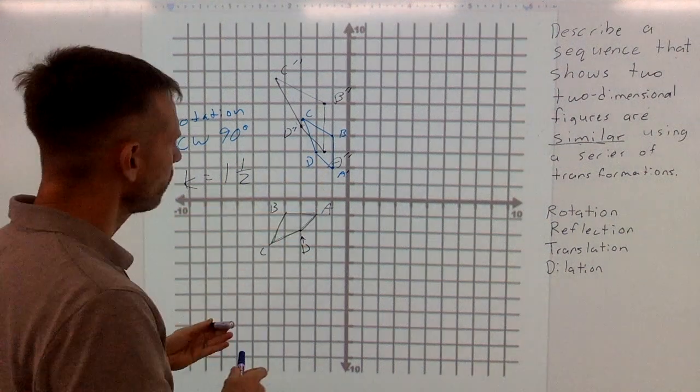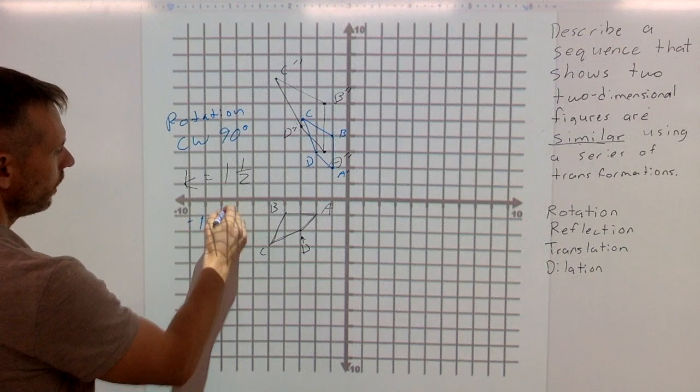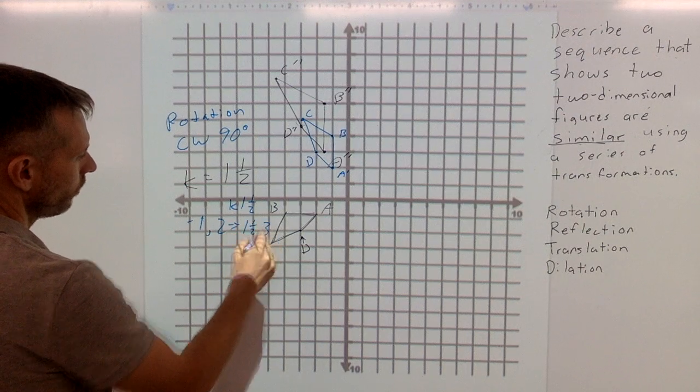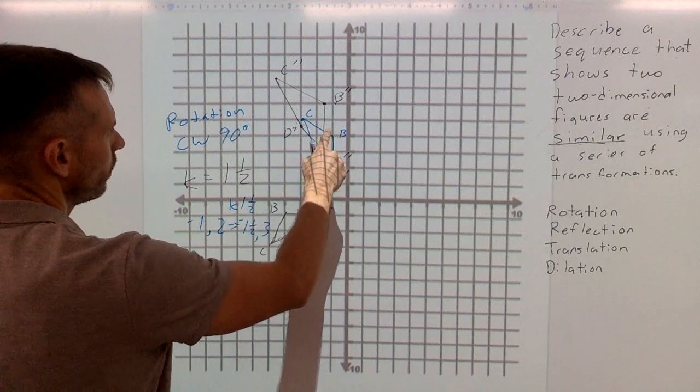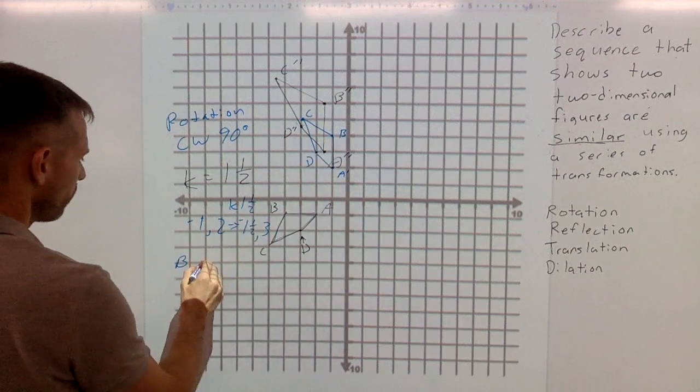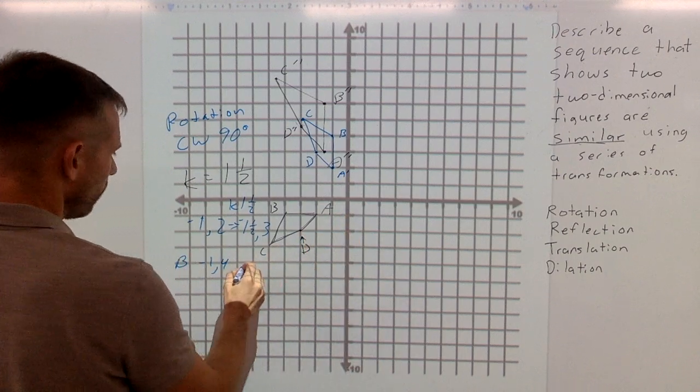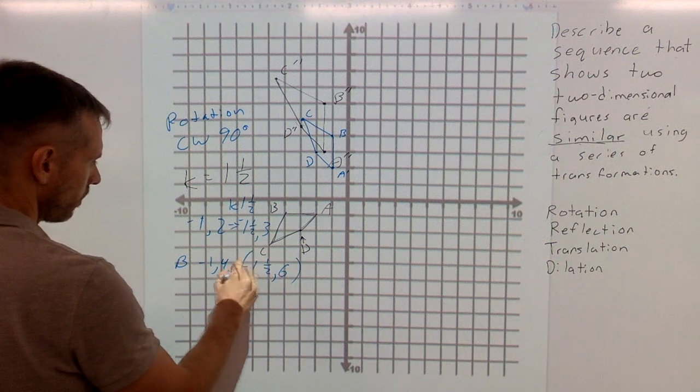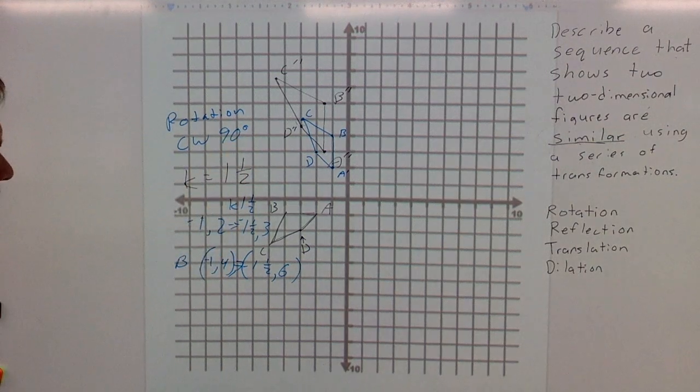But if we determine the scale factor is one and a half, then we dilate this image. This coordinate out here was negative one comma two. And if we multiply that by a scale factor of one and a half, we get one and one half comma three. And that's our new, negative one and a half, three. We'll just do one more. The B, the original one is negative one comma four. We multiply that by a scale factor of one and a half. We get negative one and one half comma six. And we can do that for the other ones as well.